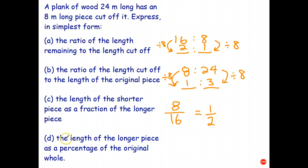And the last question, the length of the longer piece as a percentage of the original whole? Well, once again, it's best to start by writing the fraction, and then write the percent. So, the longer piece is 16 meters. The original whole is 24 meters. Well, I can divide both of those by eight to simplify the fraction, and that gives us two-thirds. And, hopefully, you've learned that two-thirds as a percentage is 66 and two-thirds percent.